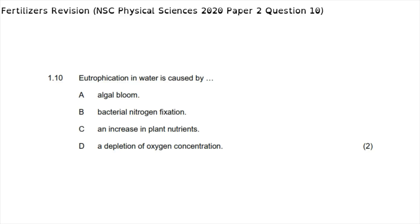Question 1.10: eutrophication in water is caused by what? Eutrophication is the increase in plant nutrients in water, which can lead to algal bloom. The correct answer is option C — when plant nutrients build up in the water, it can lead to algal bloom.